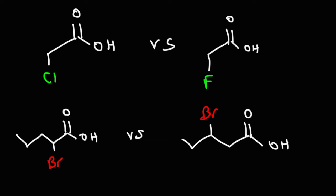Looking at the example on top, we're comparing chlorine and fluorine. Which one is the better electron-withdrawing group? In group 7A or group 17 of the periodic table, we have fluorine, chlorine, bromine, and iodine. Electronegativity increases towards fluorine. So fluorine is more electronegative than chlorine. On the electronegativity scale, fluorine has a value of 4.0. For chlorine, it's 3.0.